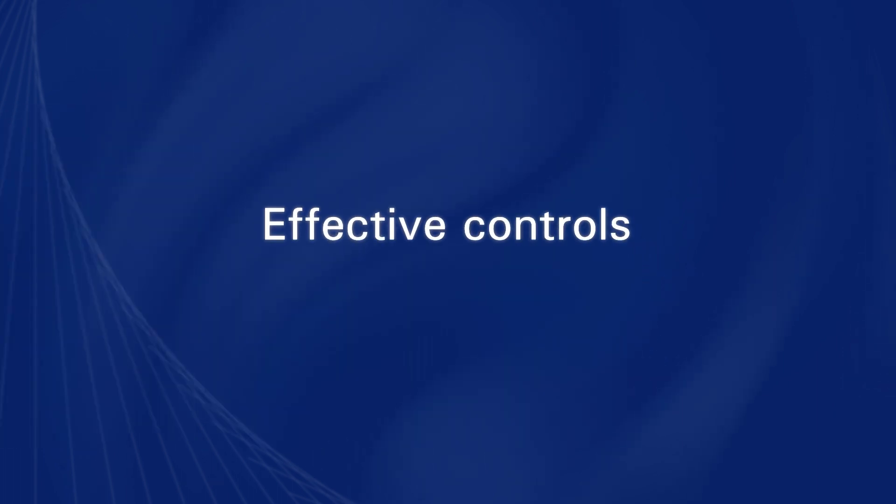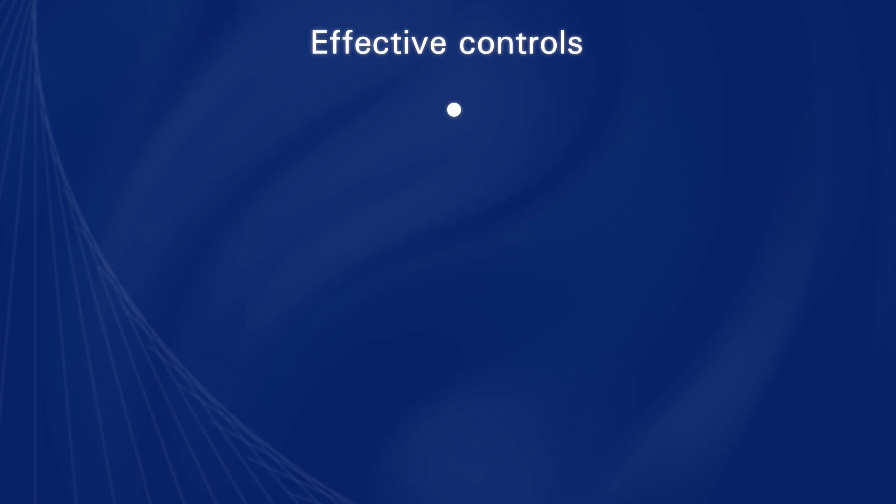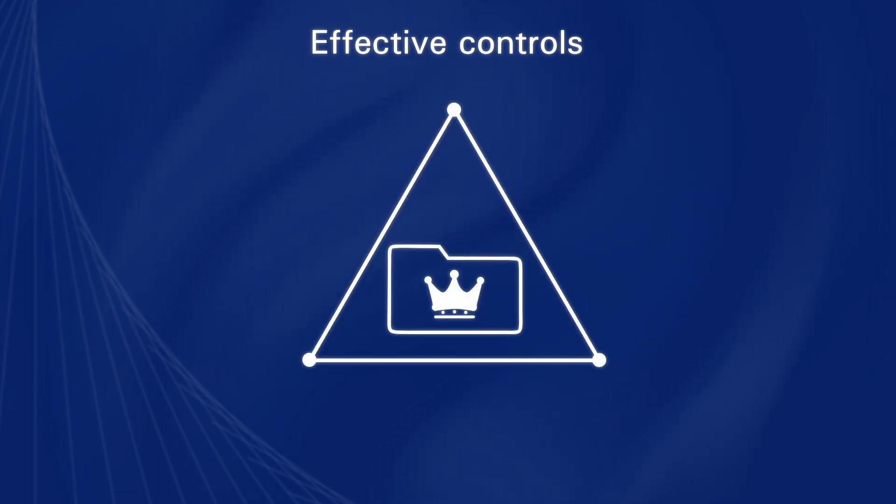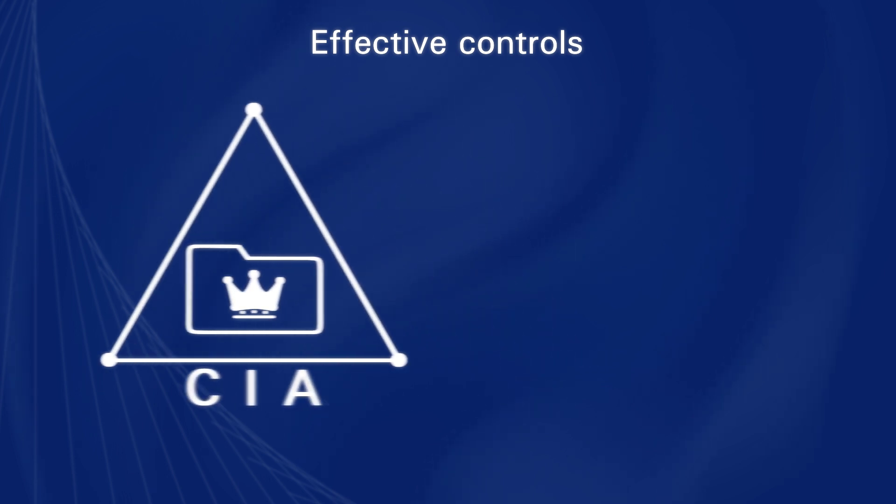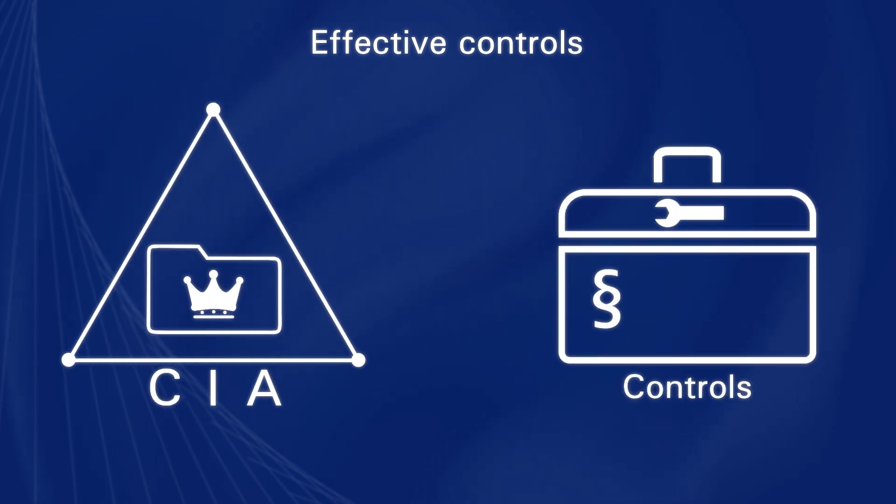Are the critical information assets well protected? Depending on the nature of the information asset, the controls that are implemented to protect them need to maintain the confidentiality, integrity, and availability of the given item. Effective controls can include policies and procedures as well as technology.